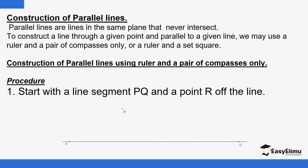To construct a line through a given point and parallel to a given line, there are two possibilities. One: you can use a ruler and a pair of compasses only. In exams you can be asked to construct a line through a given point and parallel to a given line using a ruler and pair of compasses only. The second option is using a ruler and a set square.